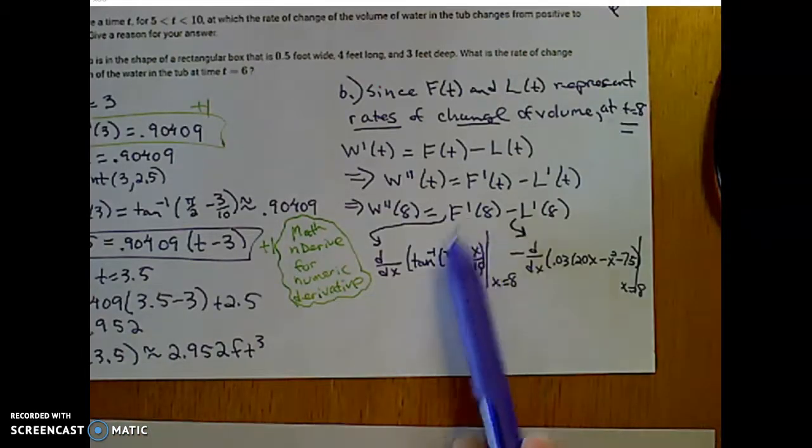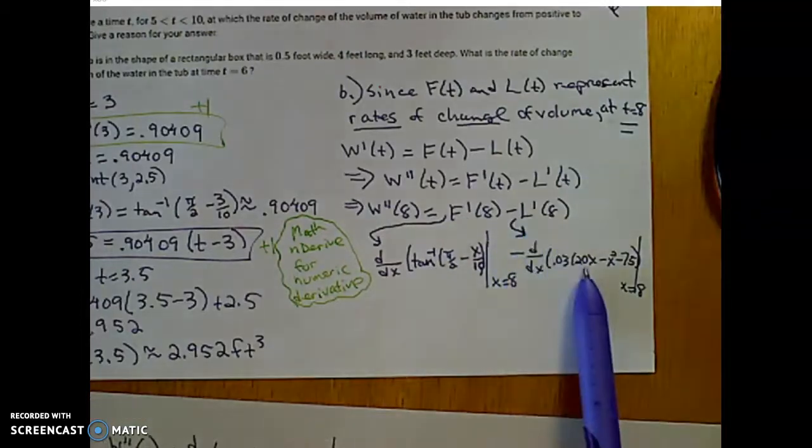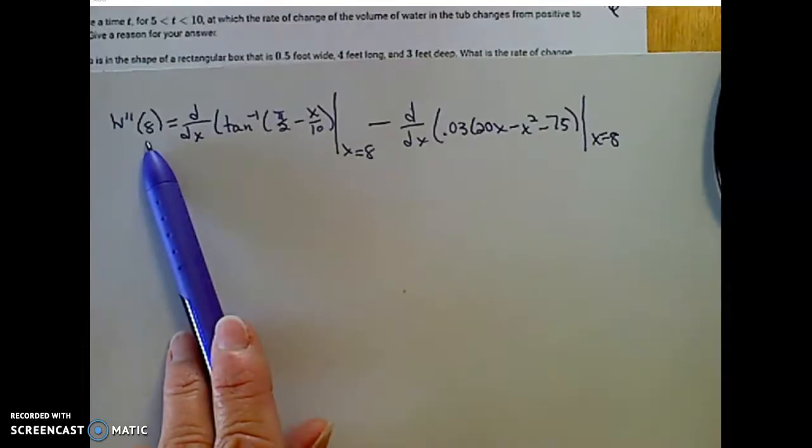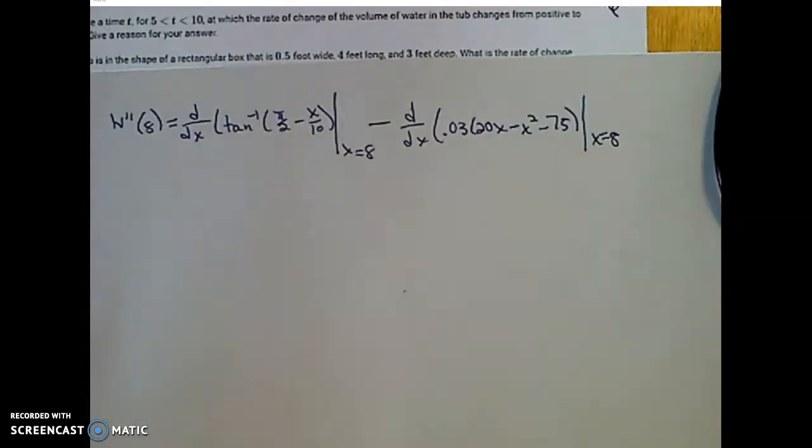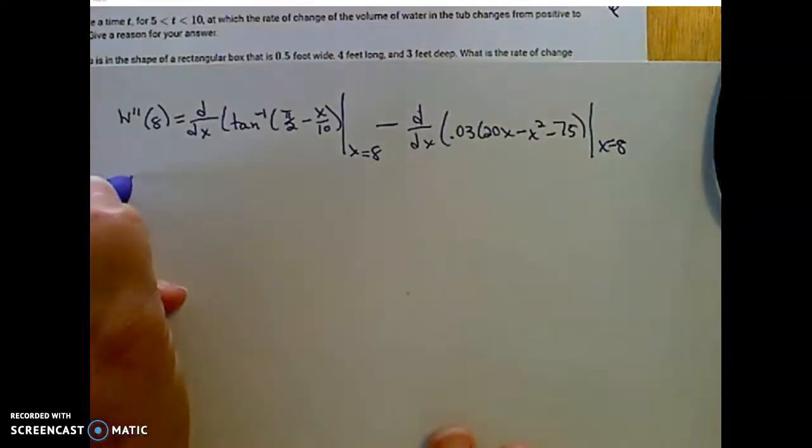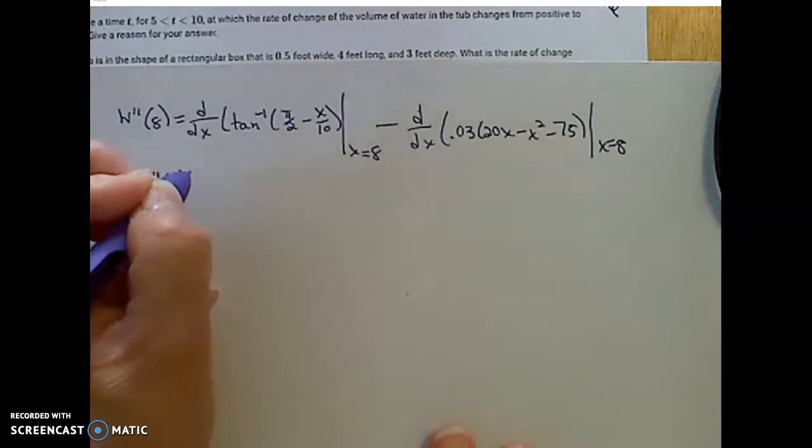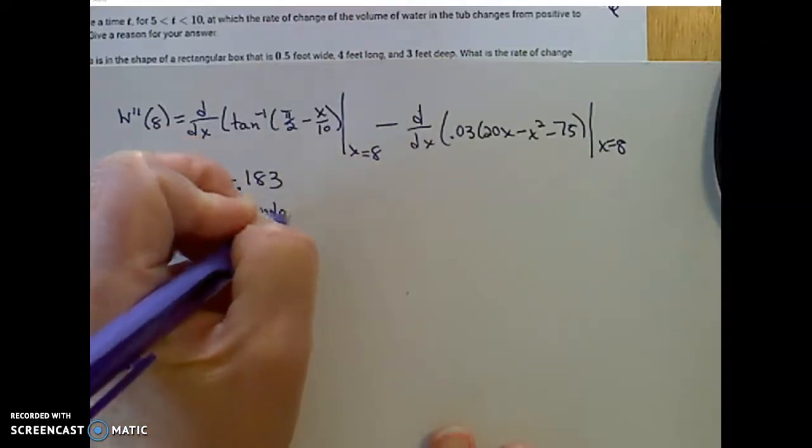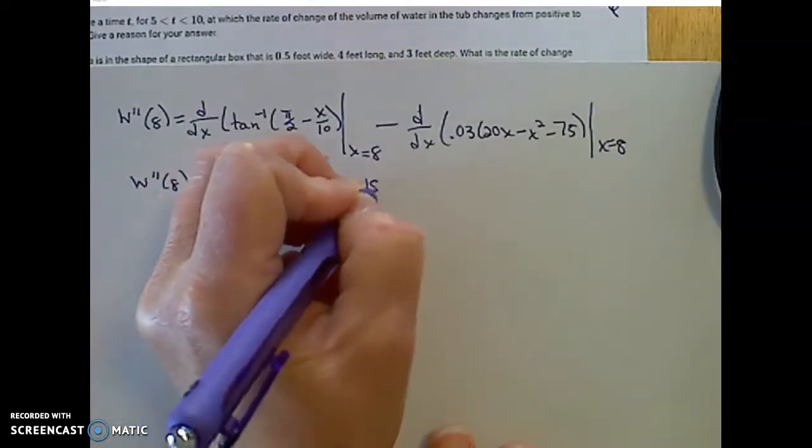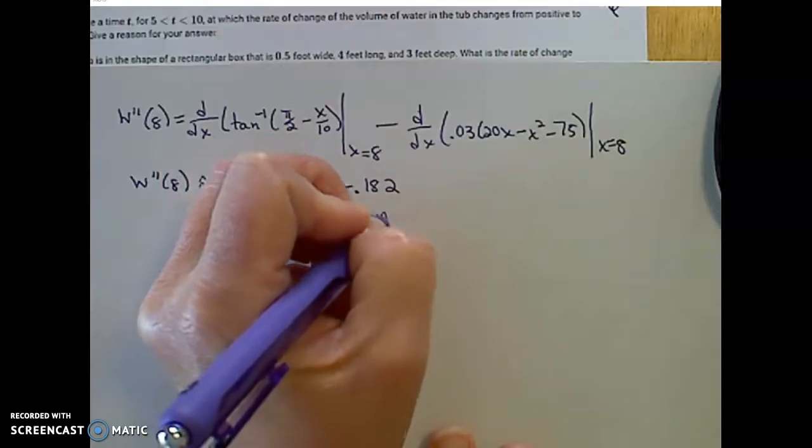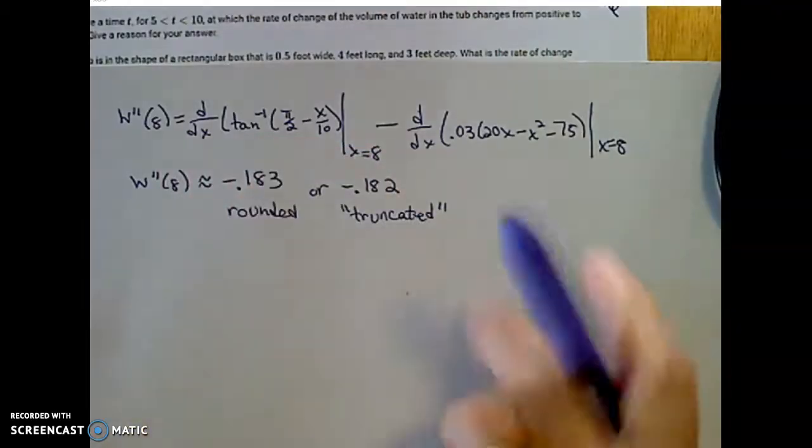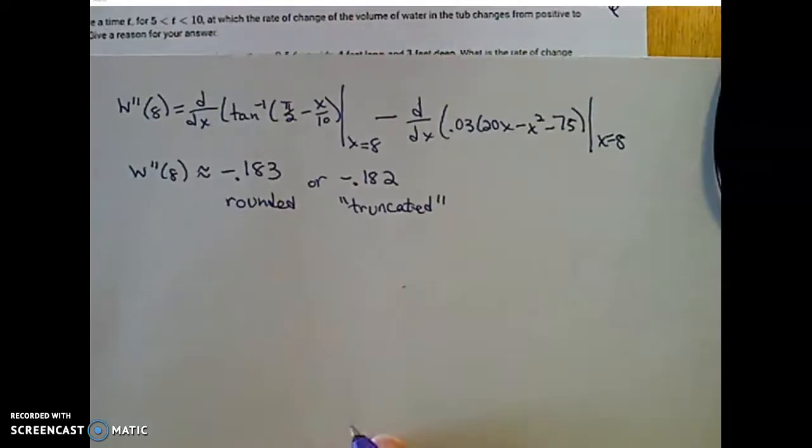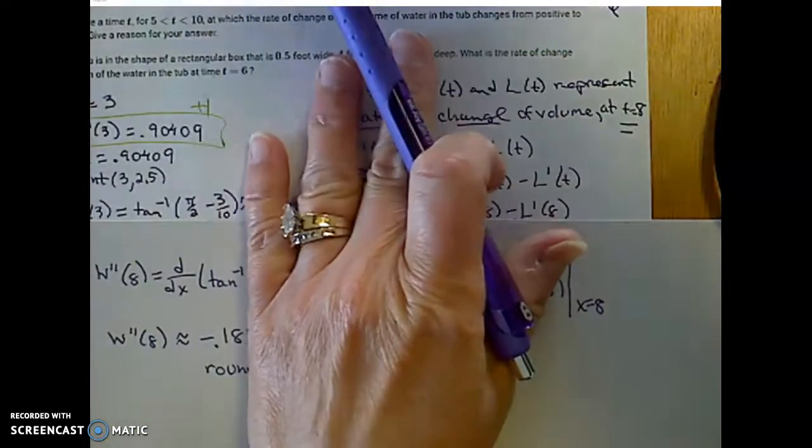Here's my calculator input for f prime of 8 minus l prime of 8. This gets so messy to plug in, I just want to make sure you can read that. This is everything I plugged into my calculator to find that second derivative of w at time equal to 8. When I plug that in, the second derivative at t equal to 8 comes out to be approximately negative 0.183. This answer is rounded. Or negative 0.182 is what we call truncated. AP will accept either one.